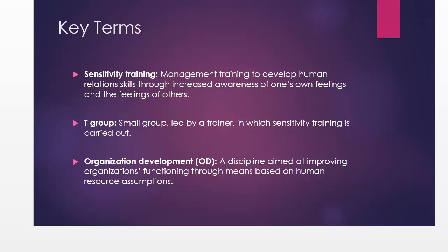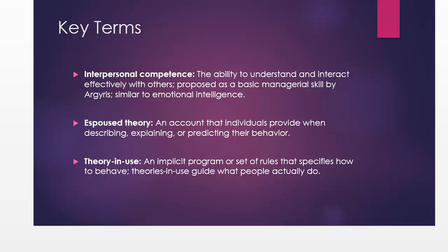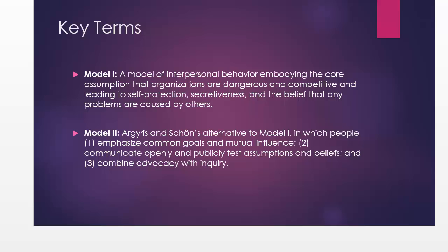Then we'll look at some sensitivity training, team and group organizational development. We're going to skim the surface there — making you at least dangerous in understanding how to develop organizations. From there, we'll start getting into emotional intelligence, espoused theory, and theory in use. This is a parallel to Theory X and Theory Y: we have Model 1 and Model 2, looking at whether organizations are dangerous and competitive places, or more structured where you can emphasize common goals, mutual influence, and communicate openly.